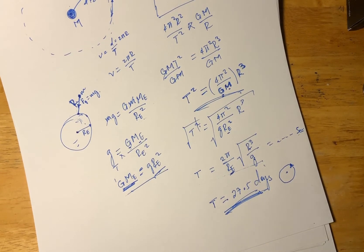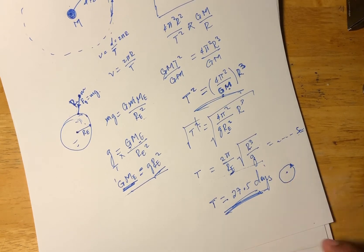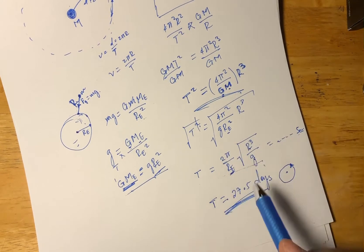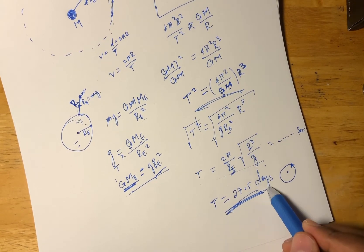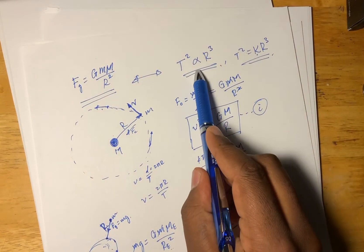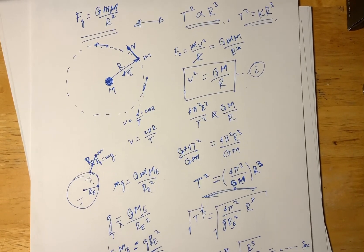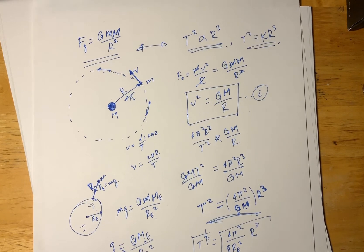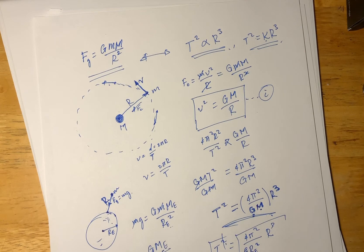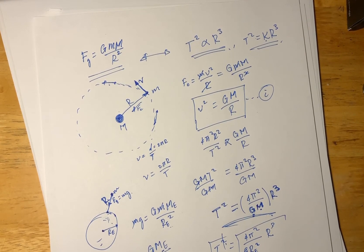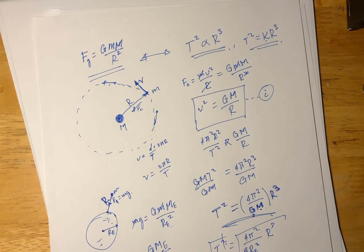Of course, Newton's gravitation law was later superseded by Einstein's general relativity, but it is still an amazing quantitative result. This derivation — proving Kepler's Law — was published by Newton in his Principia Mathematica. It's a beautiful, simple, but undeniable proof.